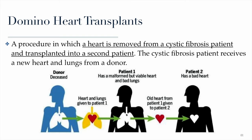Let's say they find a donor whose heart and lungs are available to be transplanted and give that heart-and-lung combo to the cystic fibrosis patient. It would be a complete waste to remove a healthy heart from the cystic fibrosis patient when heart transplants are so hard to come by due to the long waiting list. So what they do is domino the surgery: the healthy heart from the cystic fibrosis patient is then given to a second patient who only needs a heart and has perfectly healthy lungs. These two patients' surgeries happen simultaneously, like a domino effect.